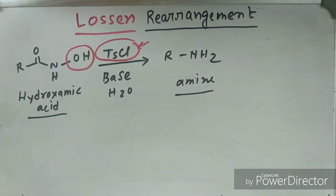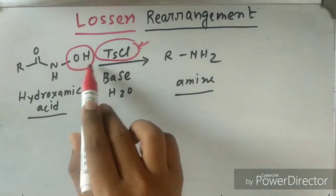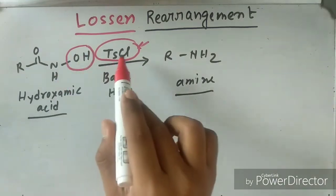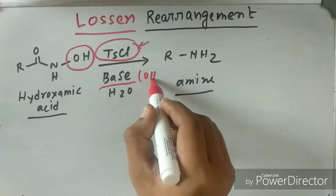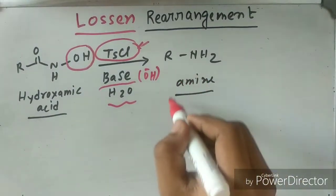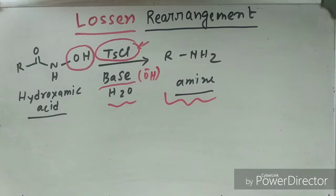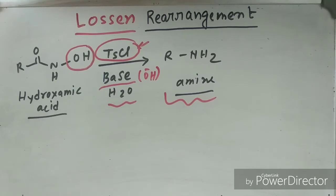This will make the O a good leaving group, and finally, by treatment of base — you can take NaOH — and in presence of water, what we get? The amine. So first I want to say that like the Hofmann and Curtius rearrangement, the Lossen rearrangement also undergoes with the same intermediate. So what is the intermediate? If you have already seen my video about Hofmann and Curtius rearrangement, you know about that intermediate — that is isocyanate.